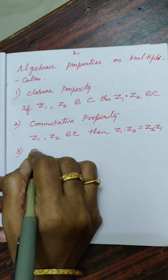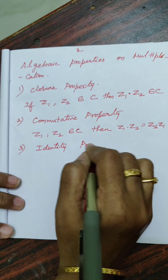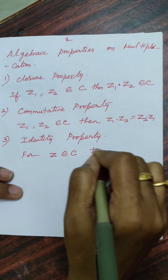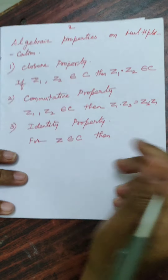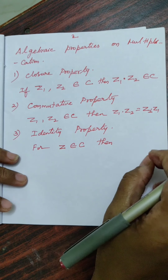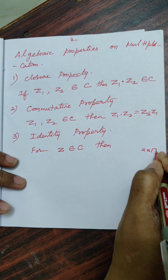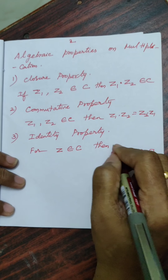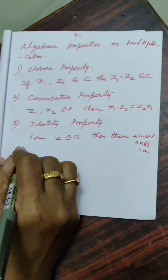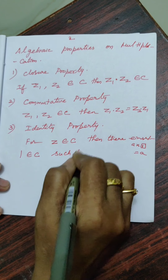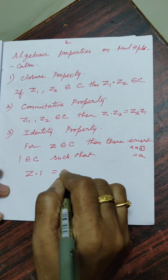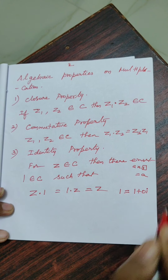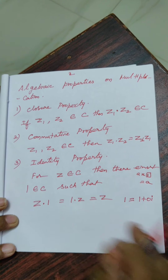Then Identity property for multiplication. In the number system, any number A multiplied by 1 gives A back — so 1 is the multiplicative identity. Similarly, for Z belonging to C, there exists 1 belonging to C such that Z into 1 equals 1 into Z equals Z. We can write 1 as 1 plus 0i — it is purely real.